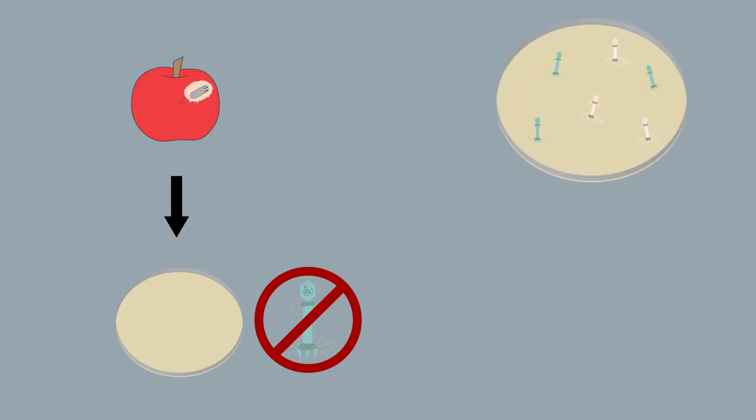Unfortunately, we didn't find any Zymomonas mobilis phages on our apple orchard hunt. But next, Chavin's going to show us what we would have done if we had found phages. For each phage plaque, we would start a fresh bacterial culture. These will be proliferation cultures.